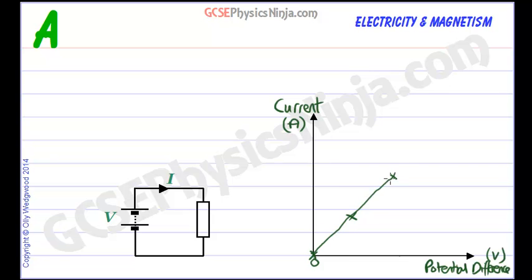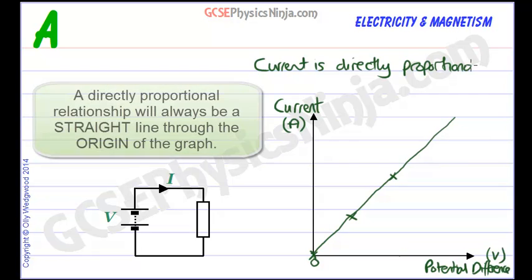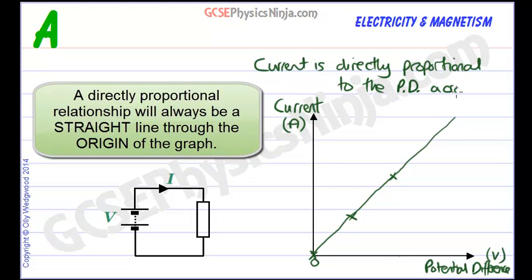And so the relationship we're going to find is a straight line going through the origin. I can line up my ruler. And this straight line is a line of proportionality. So we can say that current is directly proportional to the potential difference across a component.